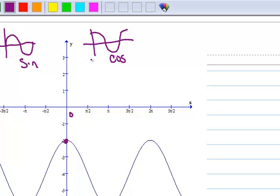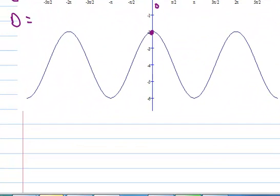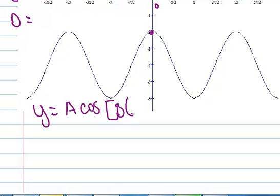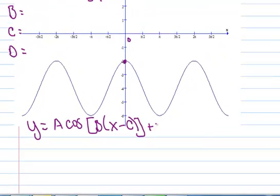Let's make this a cosine, and then when we're all done, we're going to have the form Y equals A times the cosine of B times the quantity X minus C plus D.